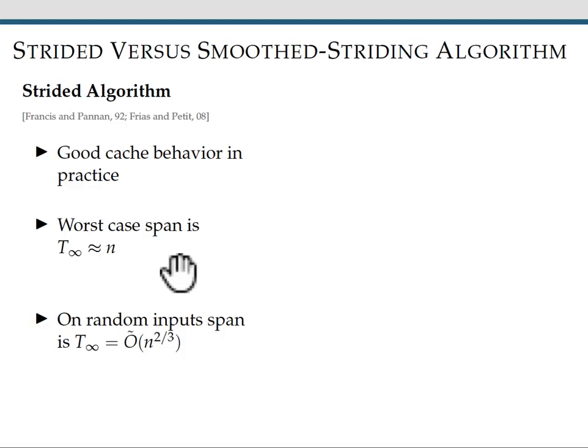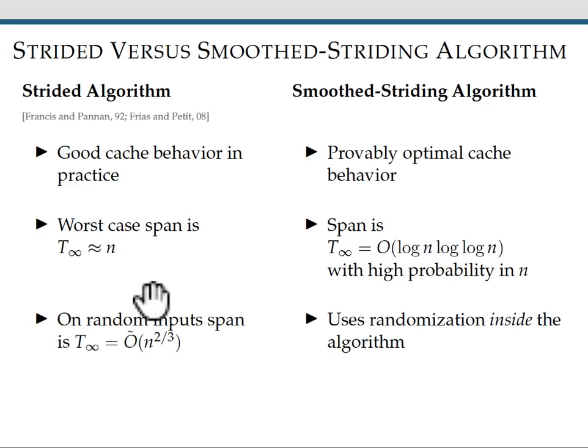But on random inputs, it actually has a better guarantee of n^(2/3) with high probability. On the other hand, we have the smoothed-striding algorithm. Our algorithm has provably optimal cache behavior instead of just empirically good cache behavior. It has span that's actually polylogarithmic with high probability in n. And it achieves all of this by using randomization inside of the algorithm. So it's not relying on randomization in the inputs, which is going to get rid of the worst case inputs. And also, this randomization allows us to have a new recursion step that was previously impossible.